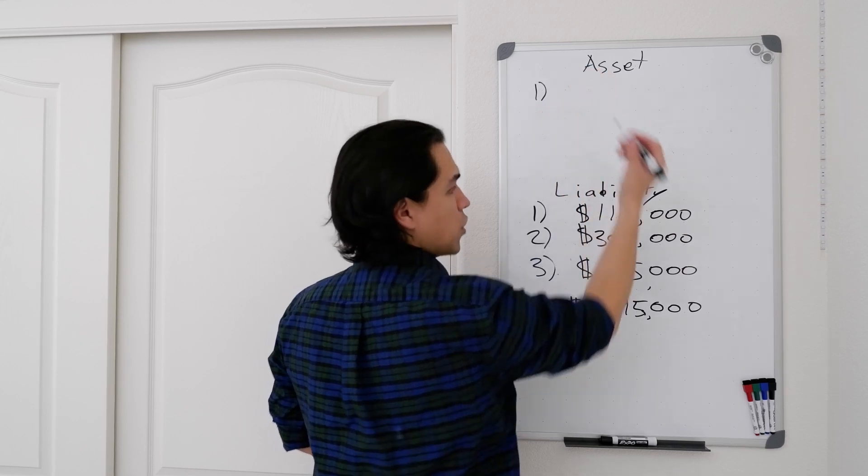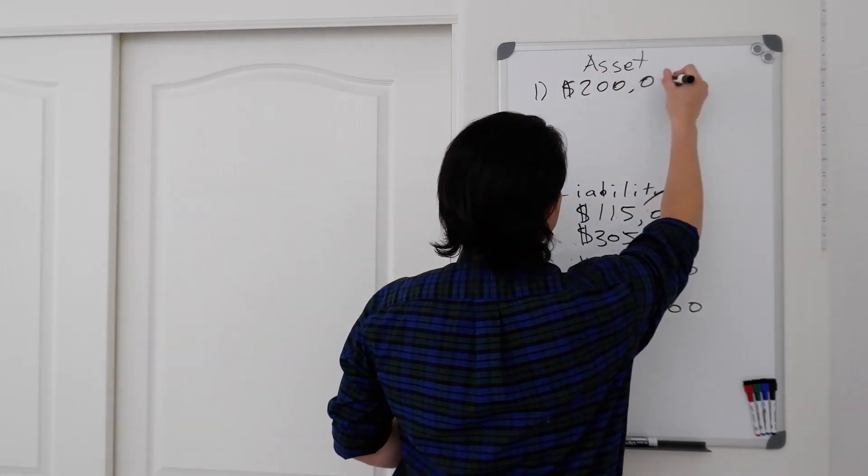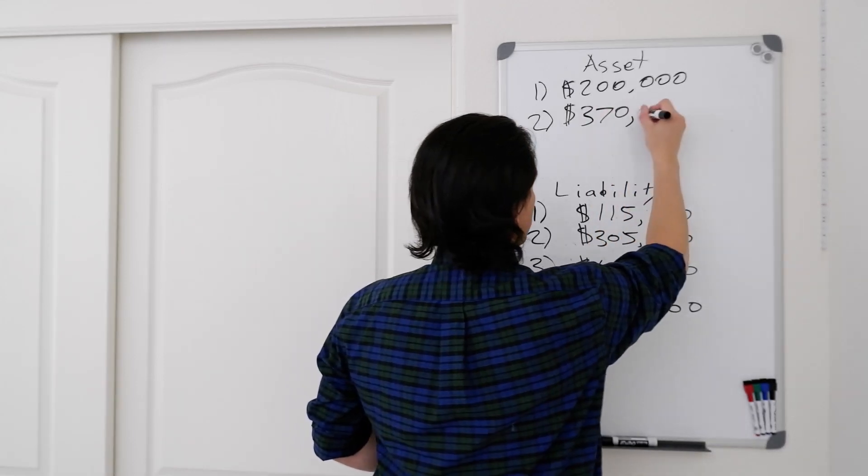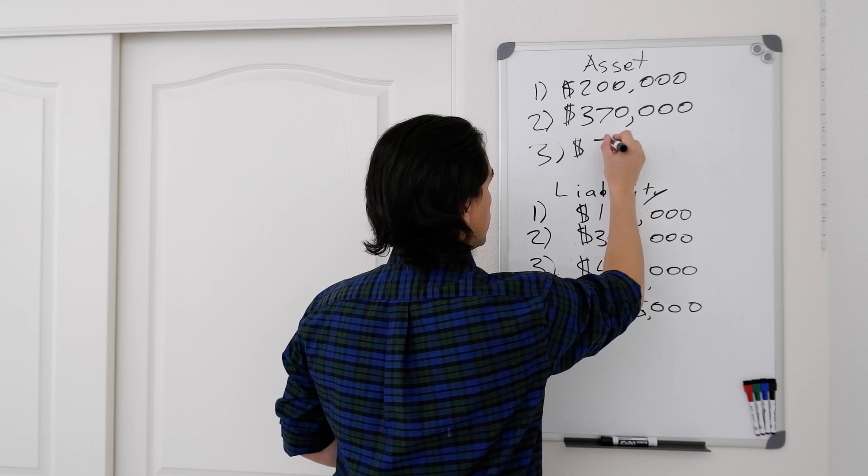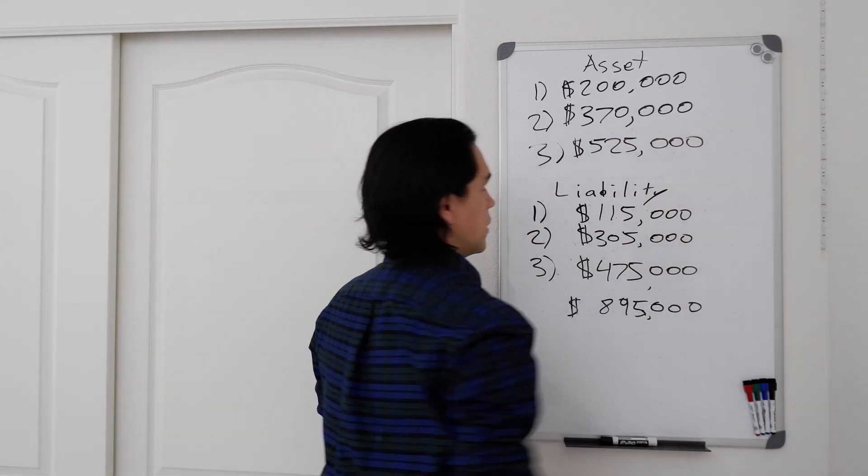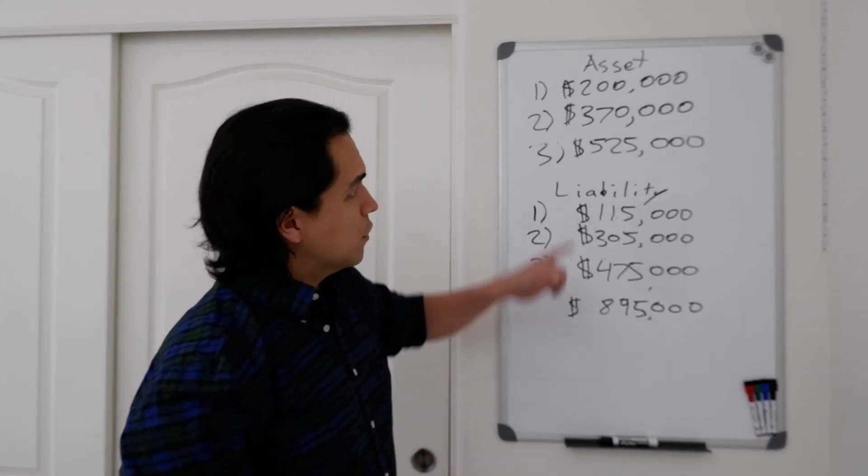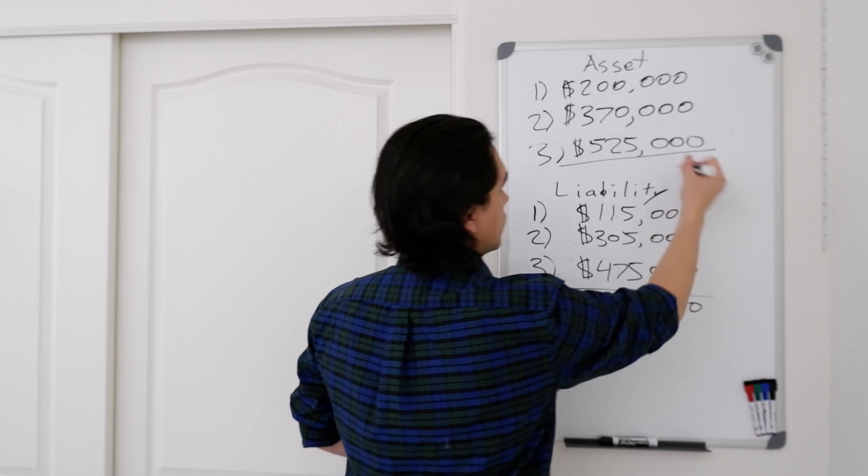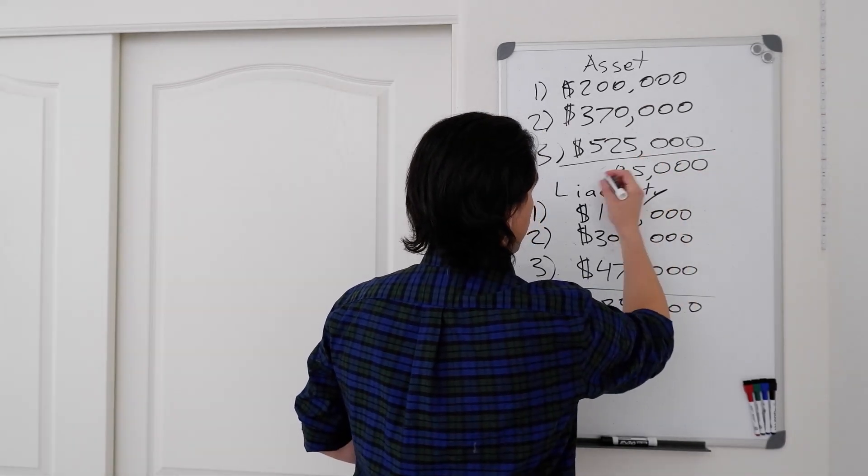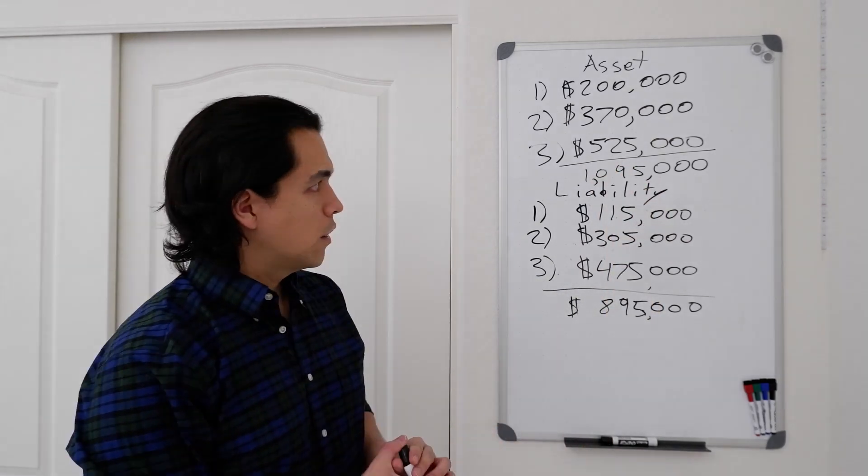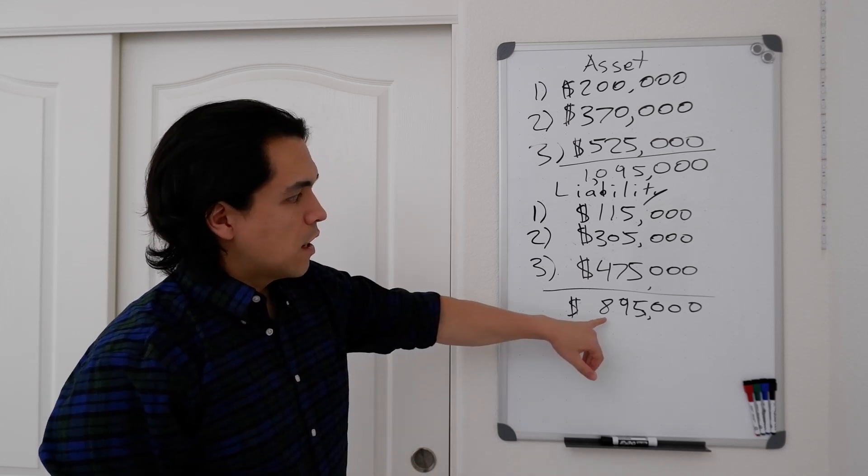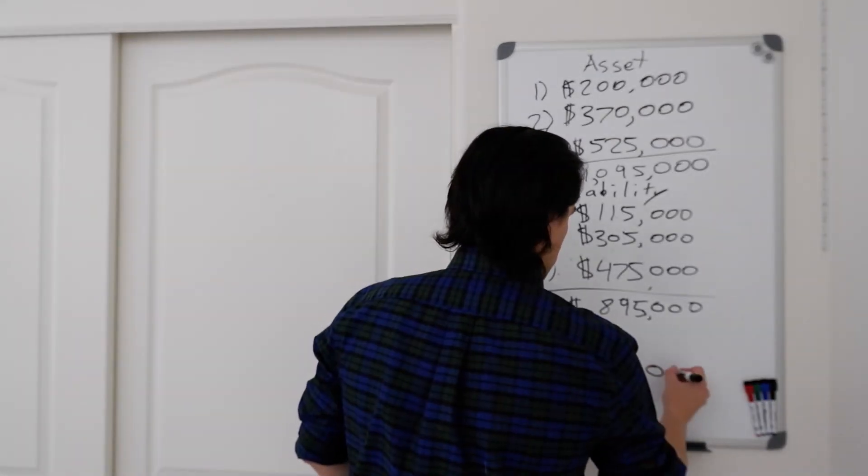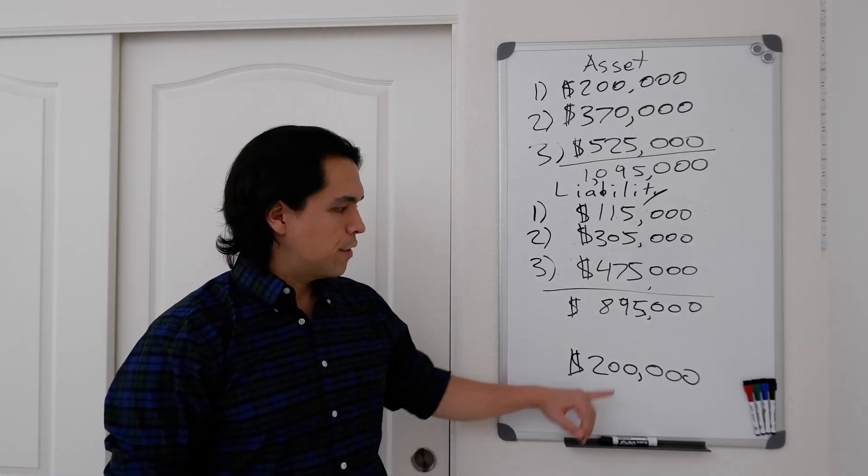So house number one is currently worth about $200,000. Just looked it up on Zillow. House number two is currently worth $370,000. House number three is worth about $525,000. The house right next to it is on sale and is going to sell to that. So when you look here, we can add these up. So now we can see the total that offsets this. Here, $1,095,000 offset that to the $895,000. And that is an addition to net worth of $200,000.